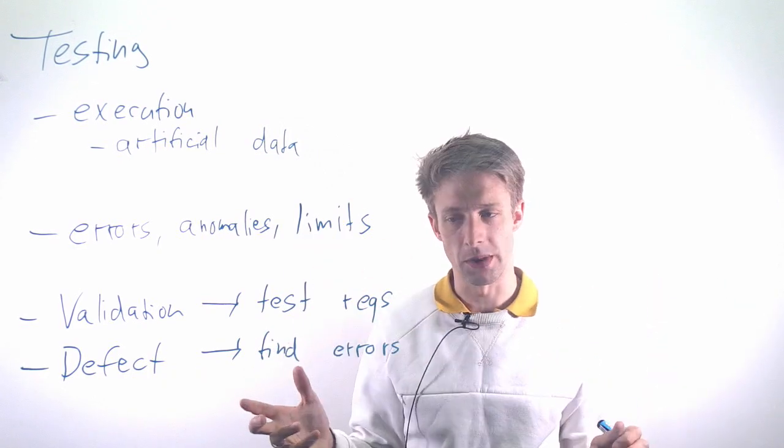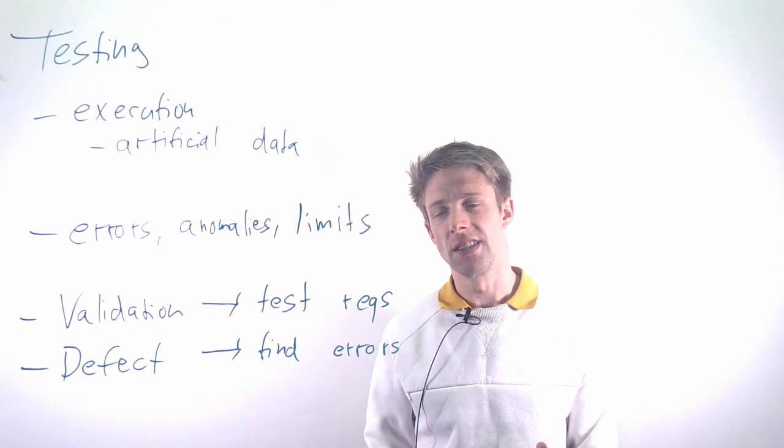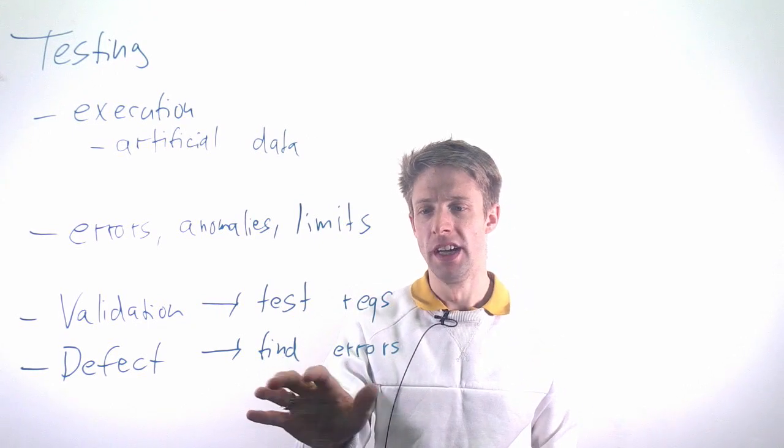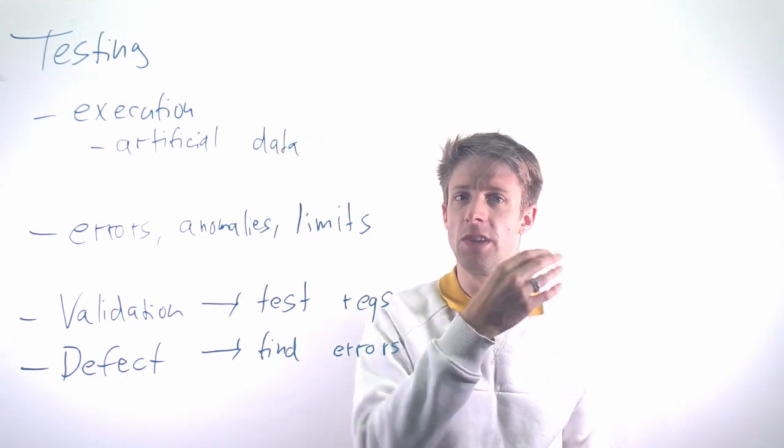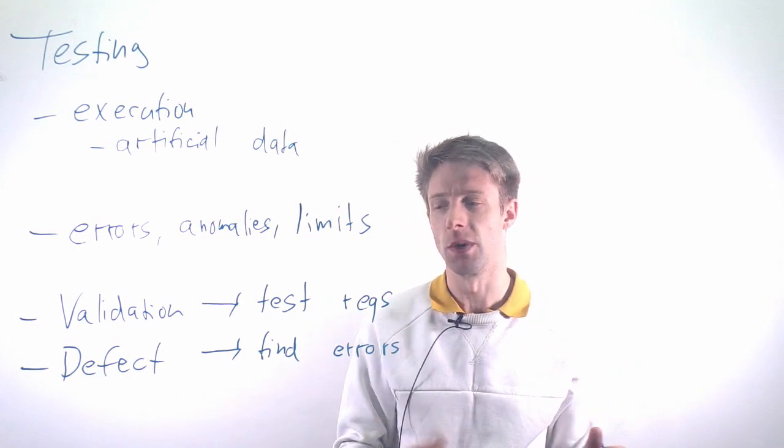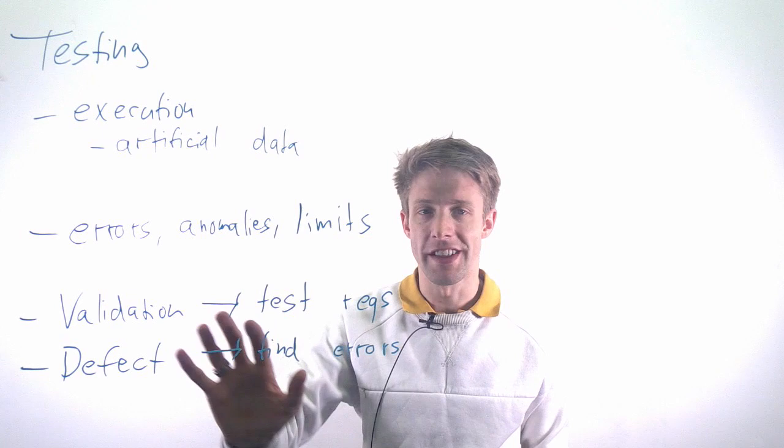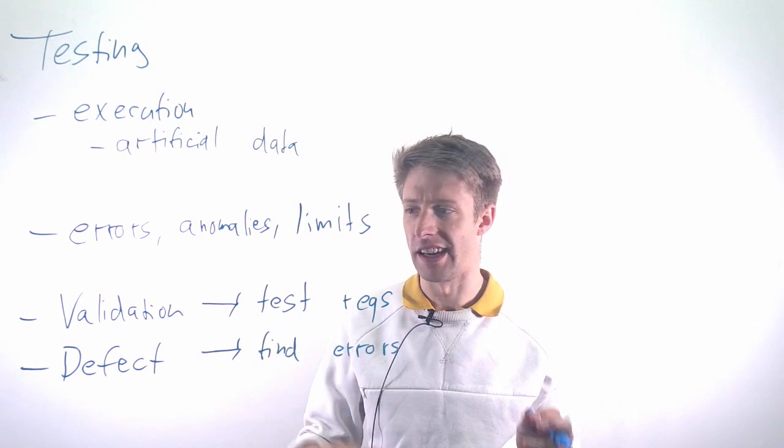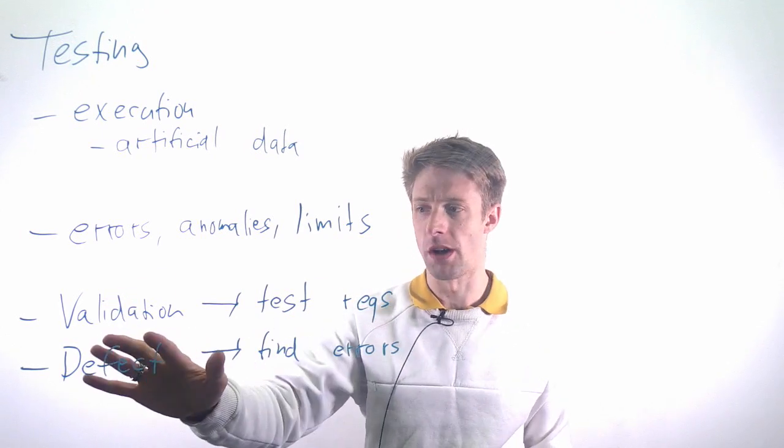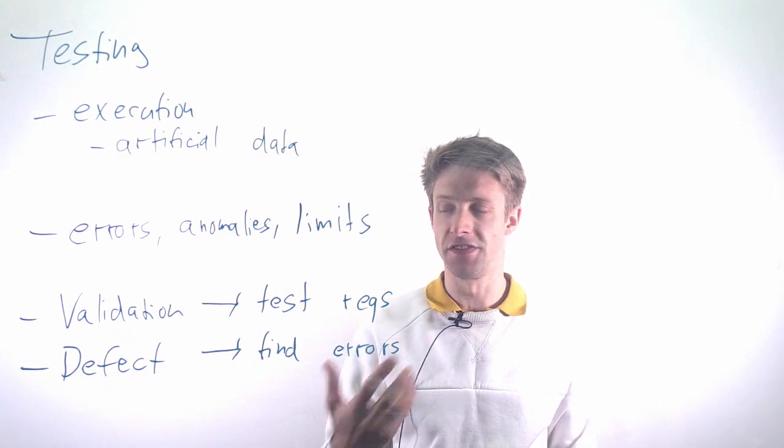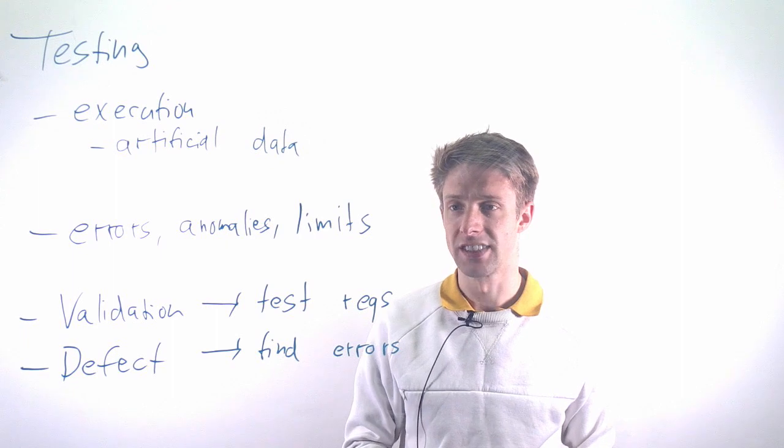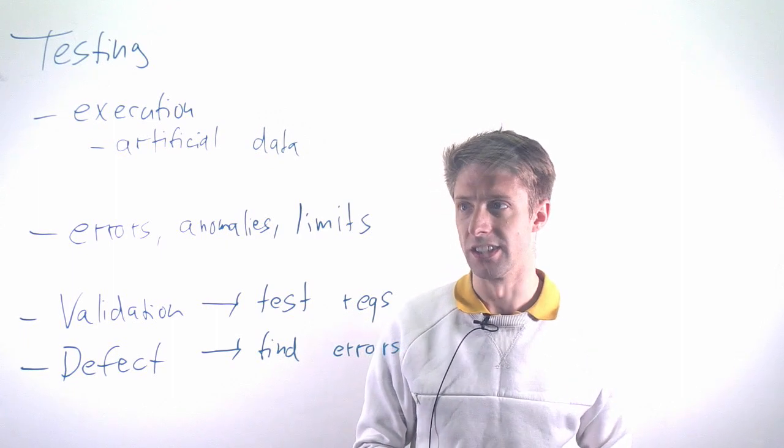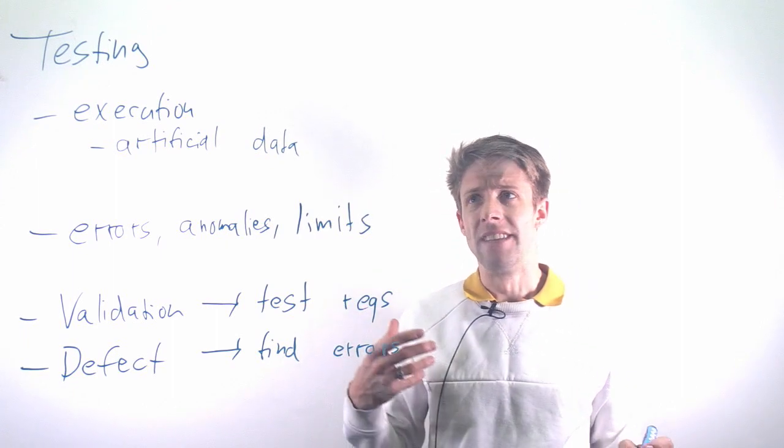Whereas in defect testing, you're trying to cover as much of the system as possible, as many strange situations as possible, to find issues in corner cases when the user behaves in an unexpected way. They're rather different in their purpose. Typically, you have a combination of both—you want to show that requirements are fulfilled and ensure there are as few defects as possible.